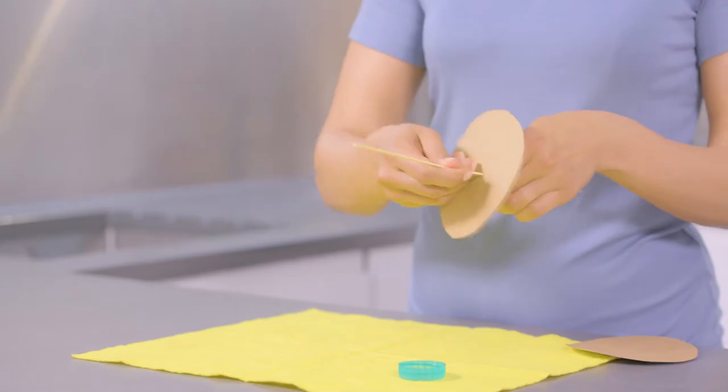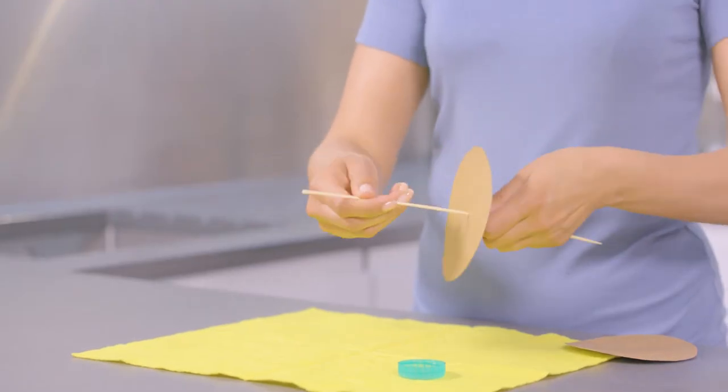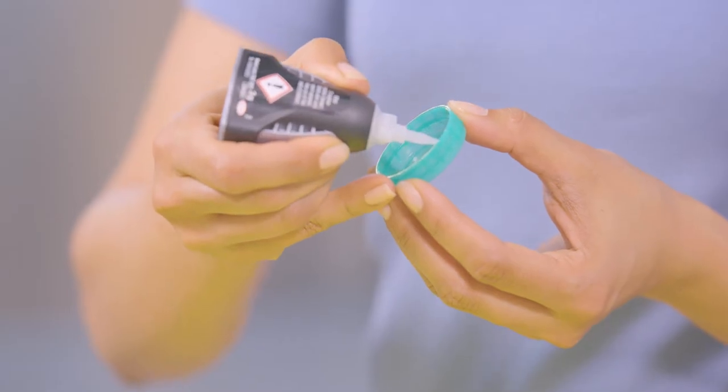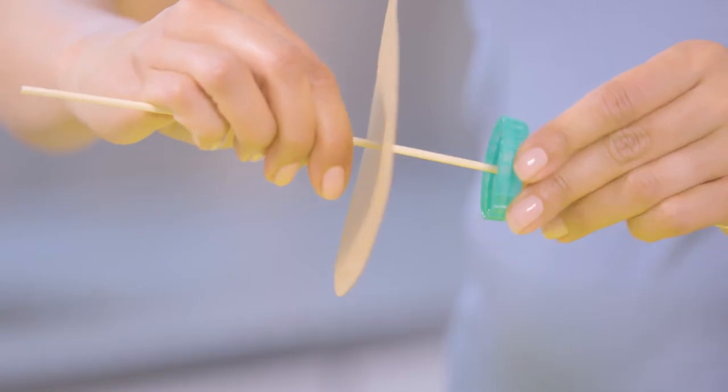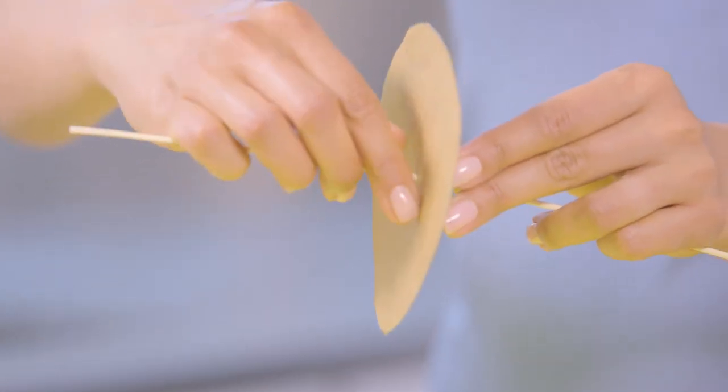Poke the barbecue skewer through the middle of one of the circles of card. Put a bit of glue on the top of the lid, slide it along the skewer, sticking it to the circle like this.